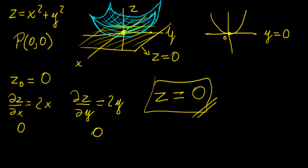Hopefully this gives you a better idea of what's happening here with respect to functions of two variables. Obviously this cannot be visualized with functions of three variables, because we would be looking at a projection of the actual function in R4. But hopefully this gives you a better idea of how you can treat surfaces and find tangent planes at specific points. In the next video we're going to continue with applications of partial derivatives and talk about the total differential.